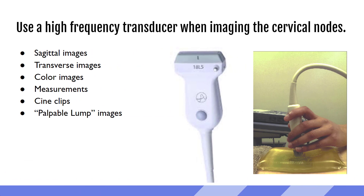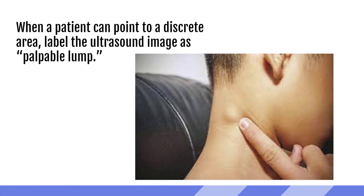Because most of the neck and face structures are very superficial, we should be using a high frequency transducer, especially when evaluating lymph nodes and wanting to really assess their ultrasound appearance. For all lymph nodes of interest, we're definitely going to be getting sagittal images and transverse images. We want to make sure we're getting our measurements, color to show that hilar flow, cine clips if needed, and palpable lump images. When a patient can point to a very discrete area, label the ultrasound image as palpable lump, and then indicate right side, left side, superior, inferior, where you are on the body.